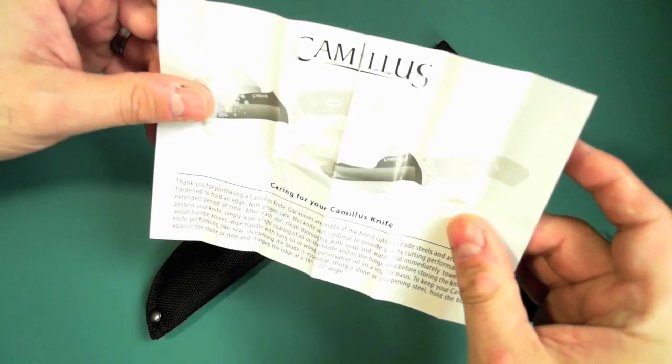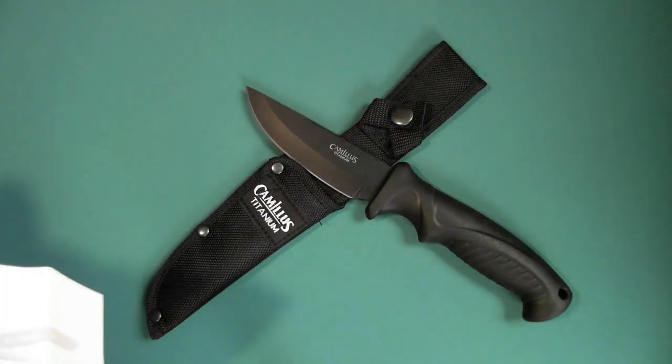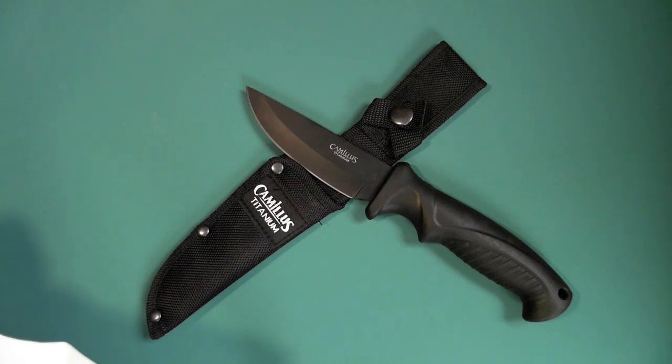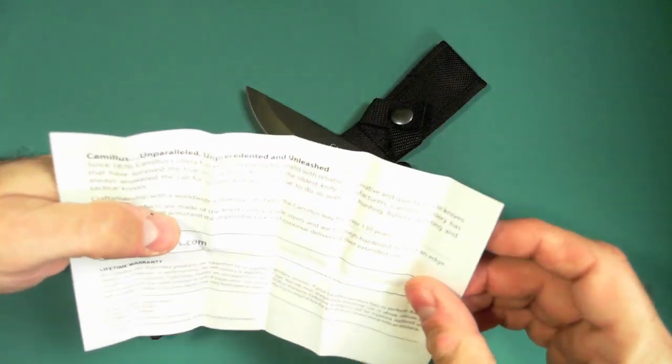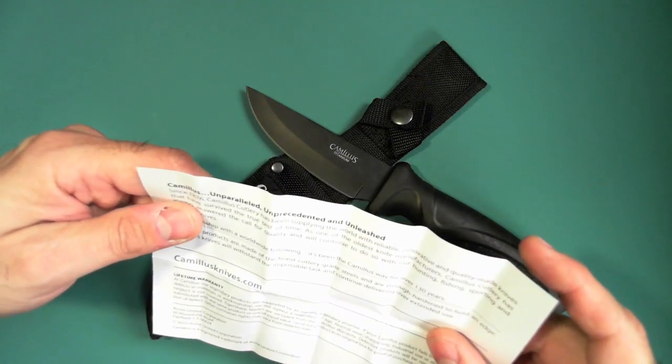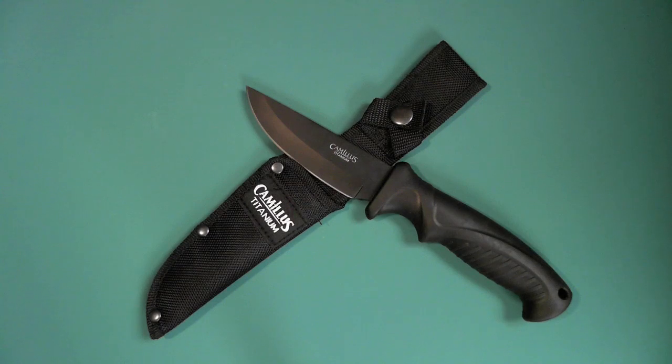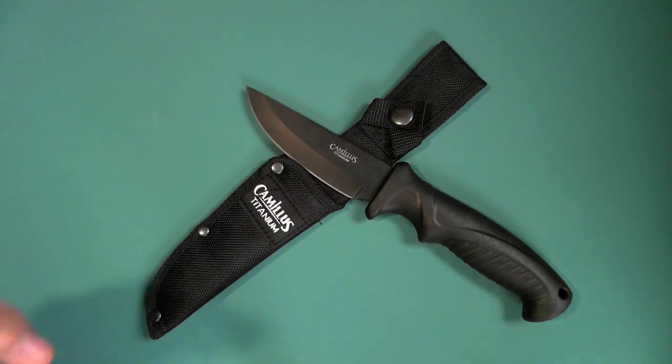So here's what you get in the packaging. You also get this paper here with some care for your Camillus knife, and the one thing I'd like to just point out is that they say to sharpen this with a stoner steel at 18 to 22 degrees. I may have misspoken the last scene, they're 130 years old, Camillus, the original company, and they were established in 1876. But again, that company's out of business, and it's just somebody with the new name, Acme.